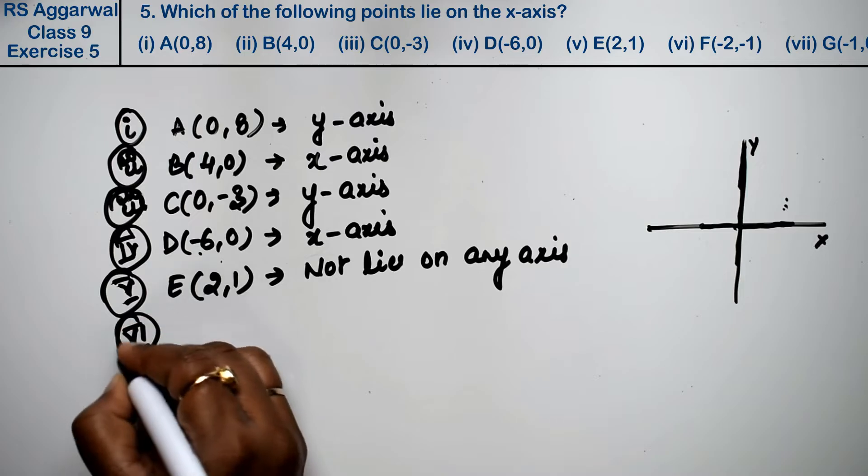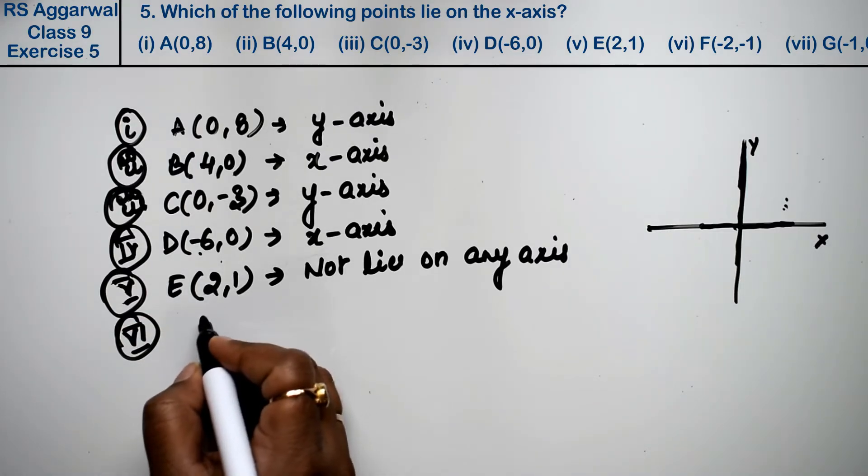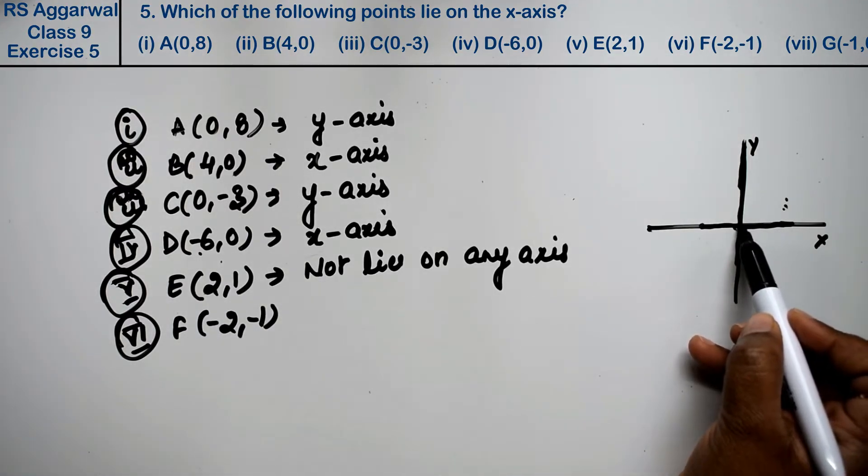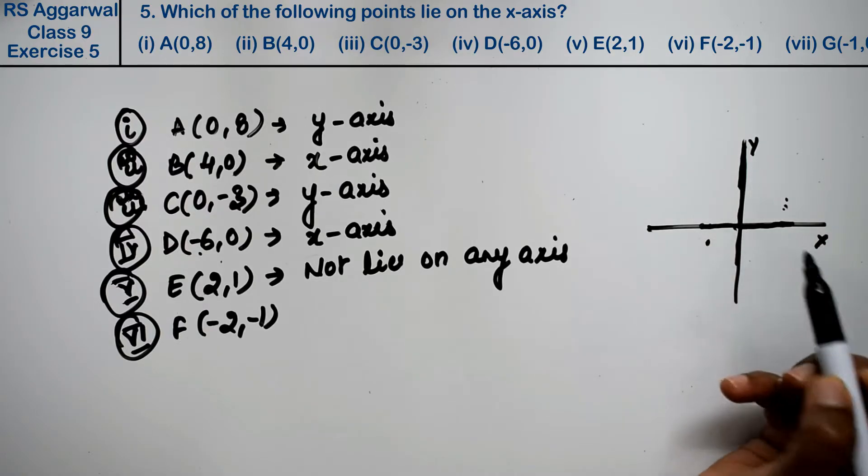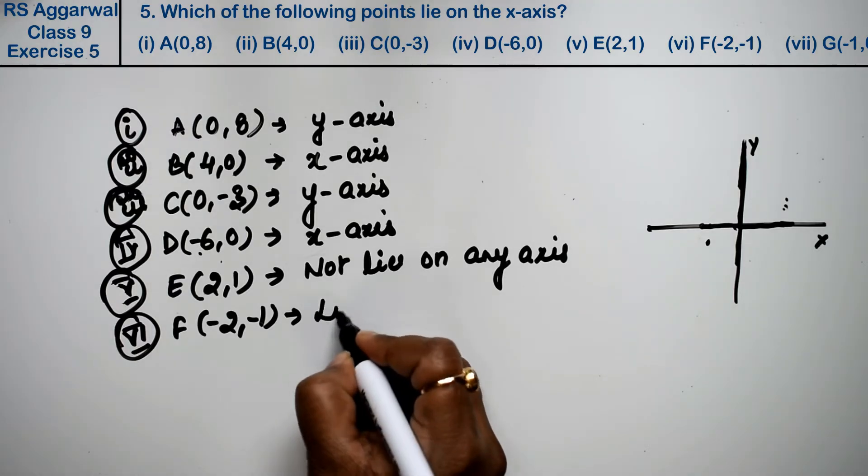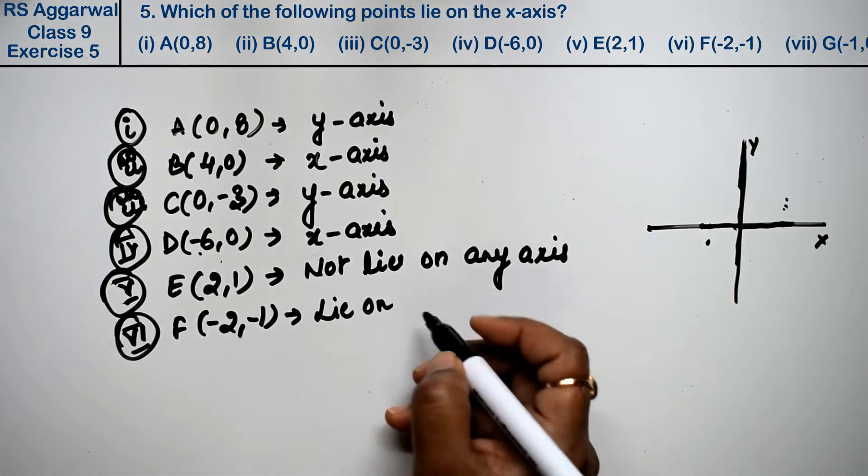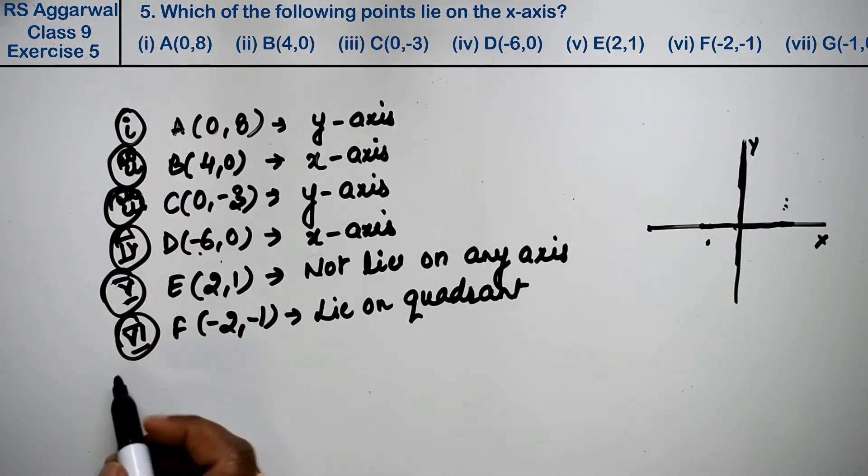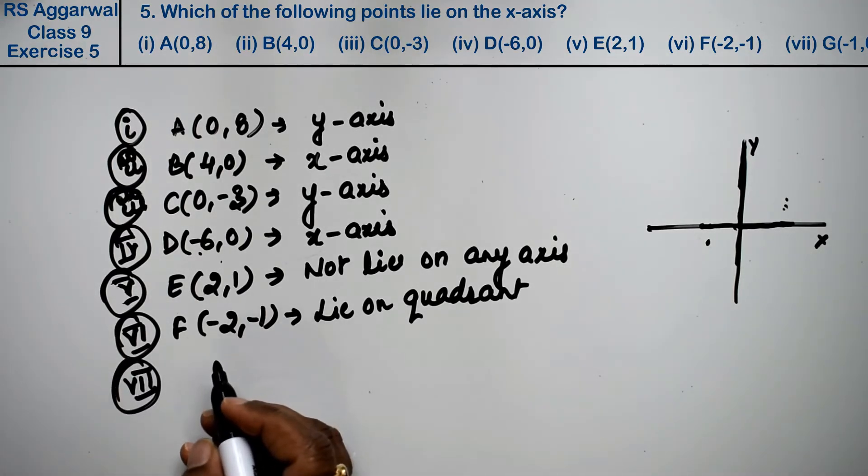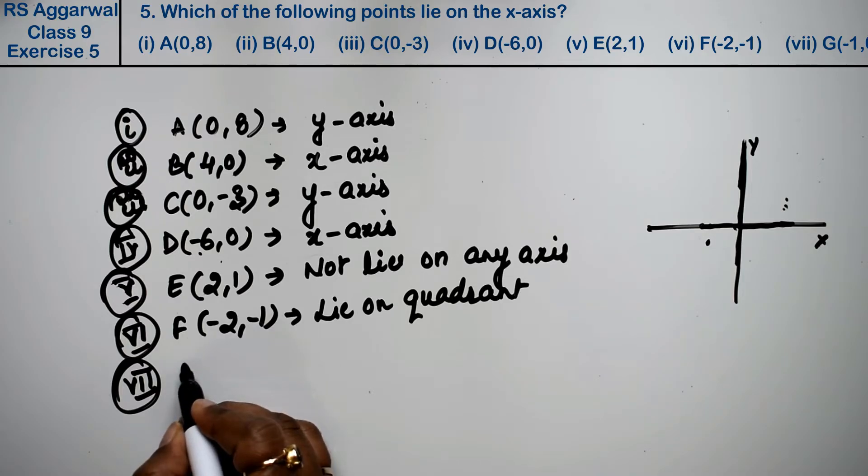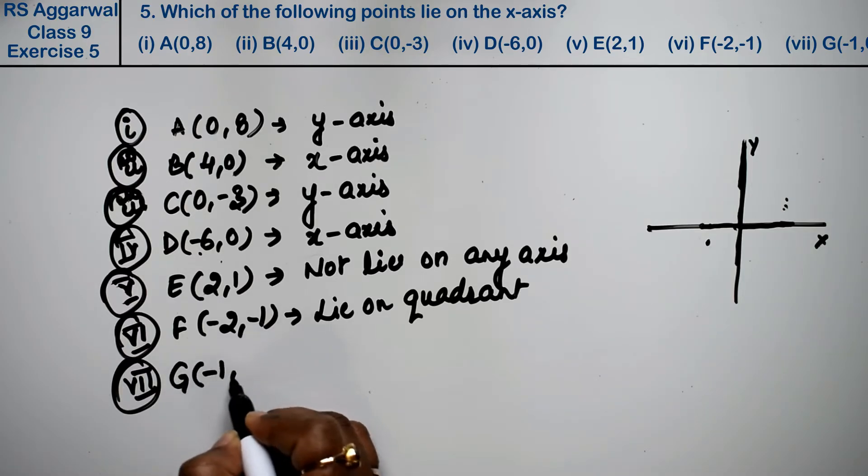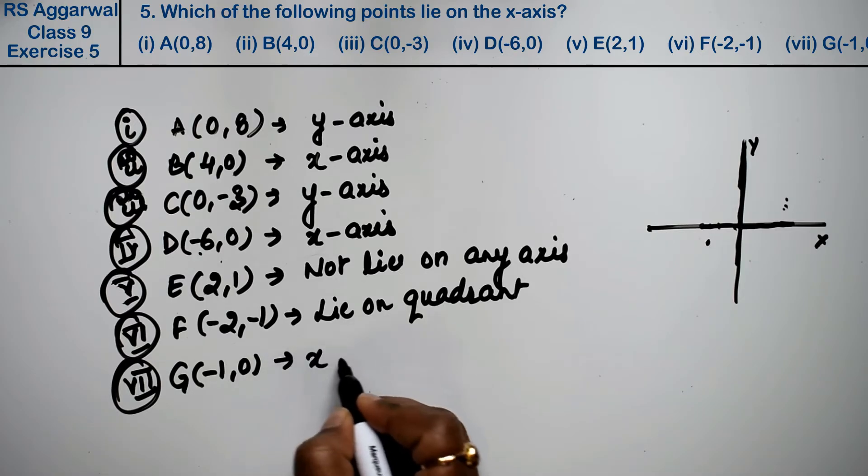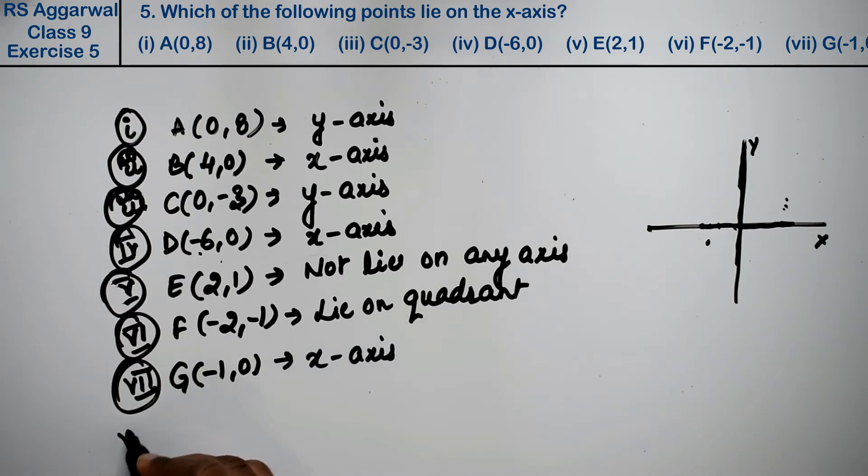Let's do sixth part. Sixth part is F(-2,-1). Now similarly, neither x nor y is 0, so it does not lie on any axis.